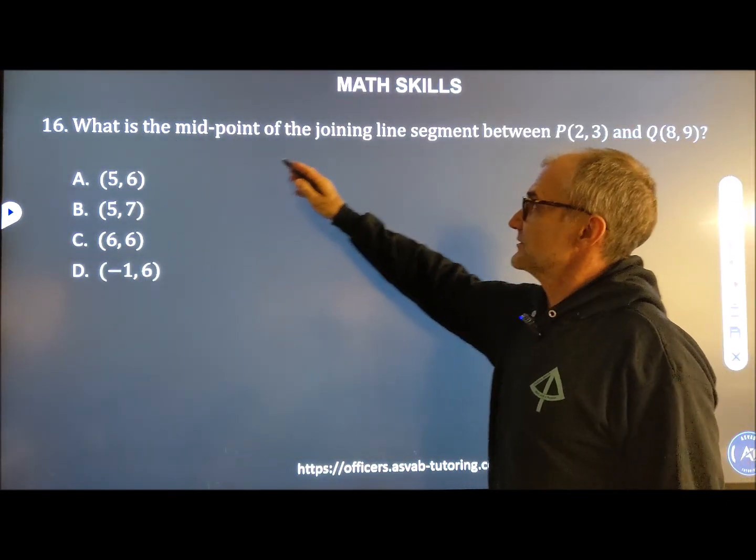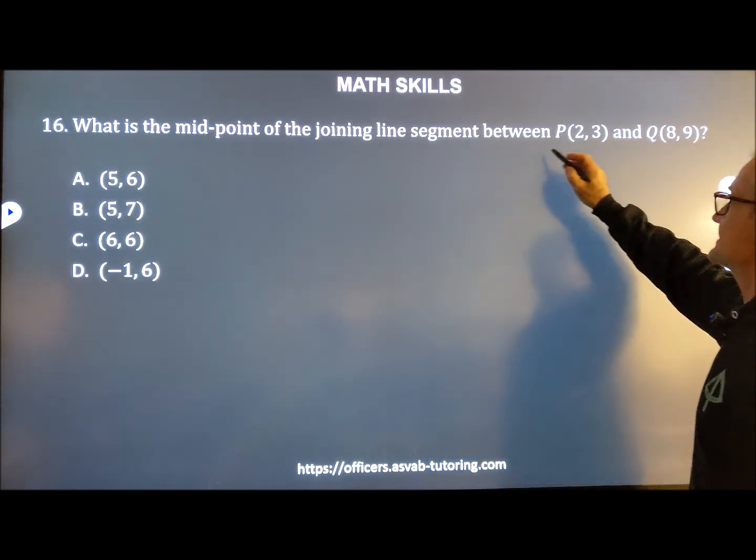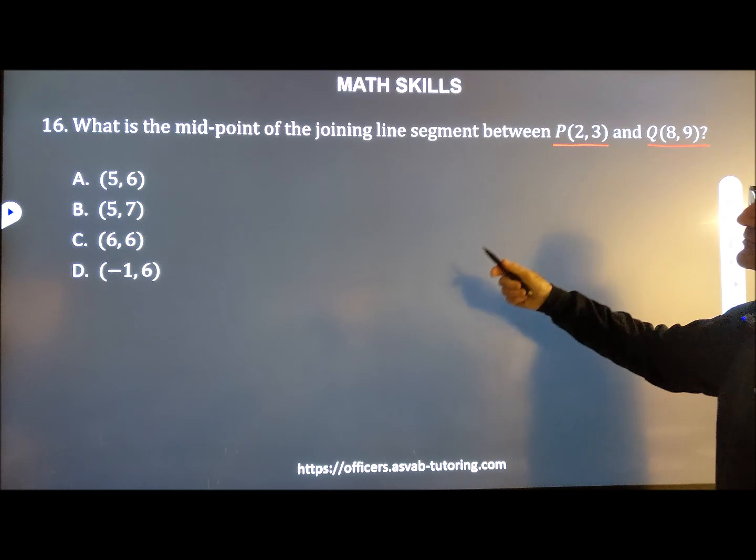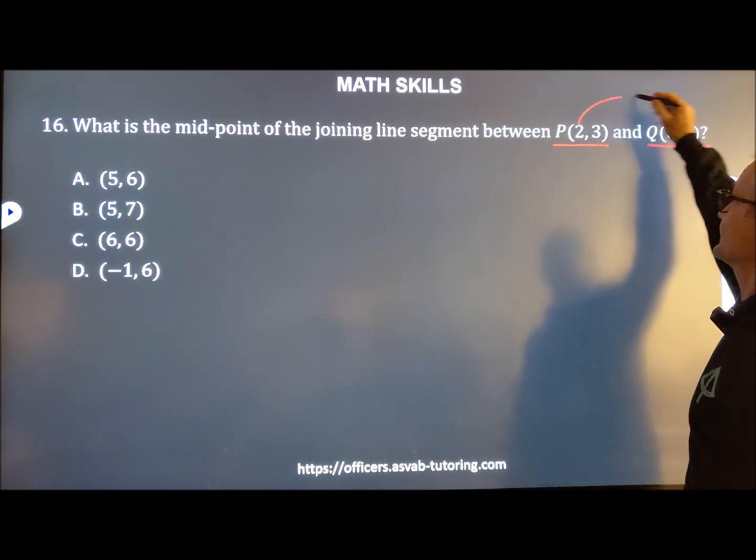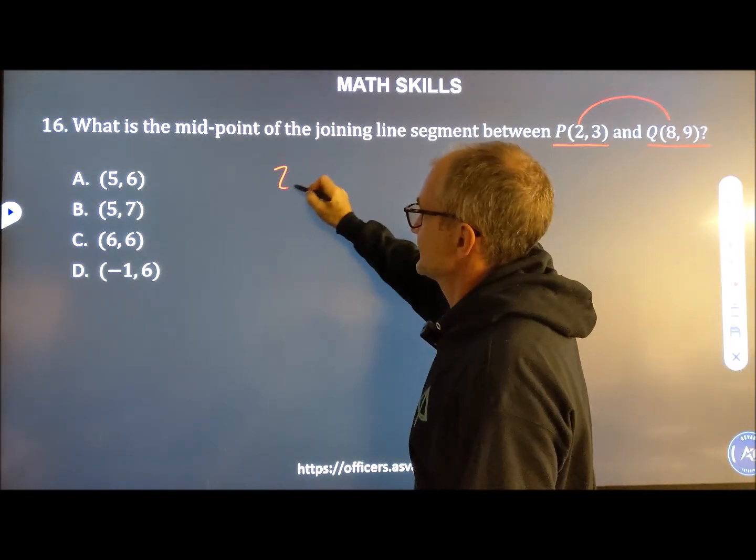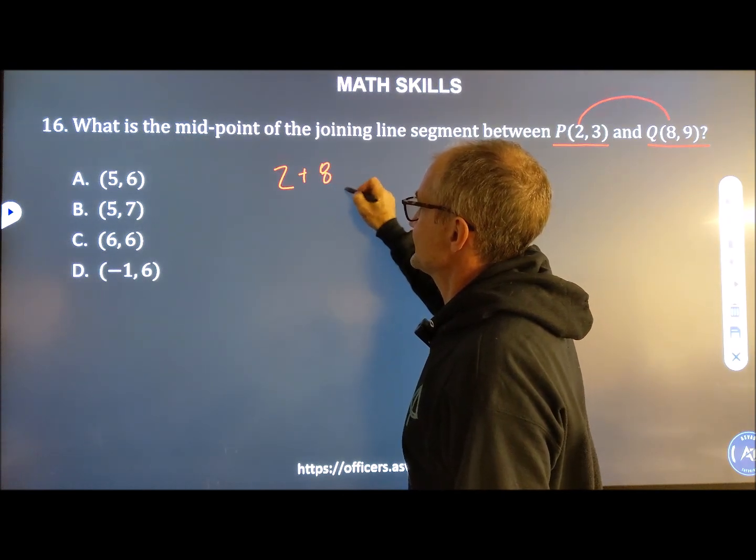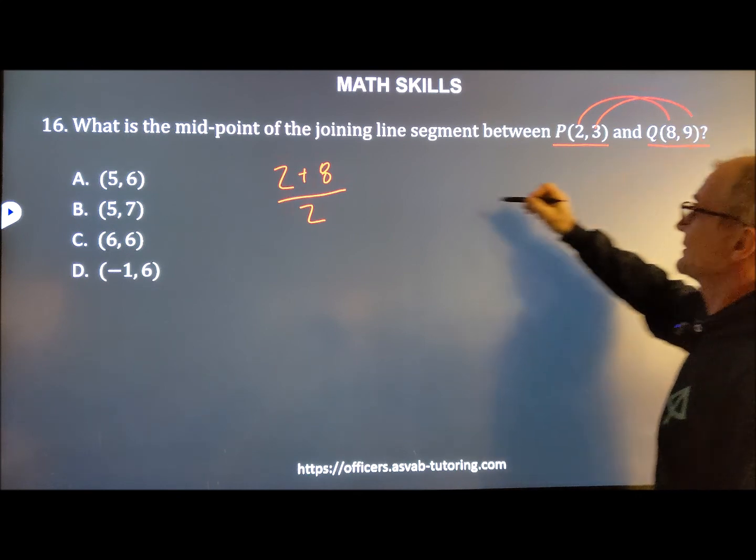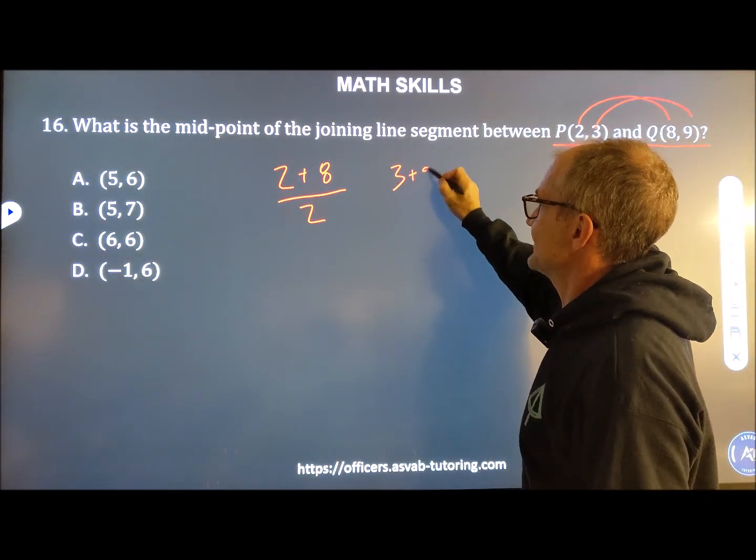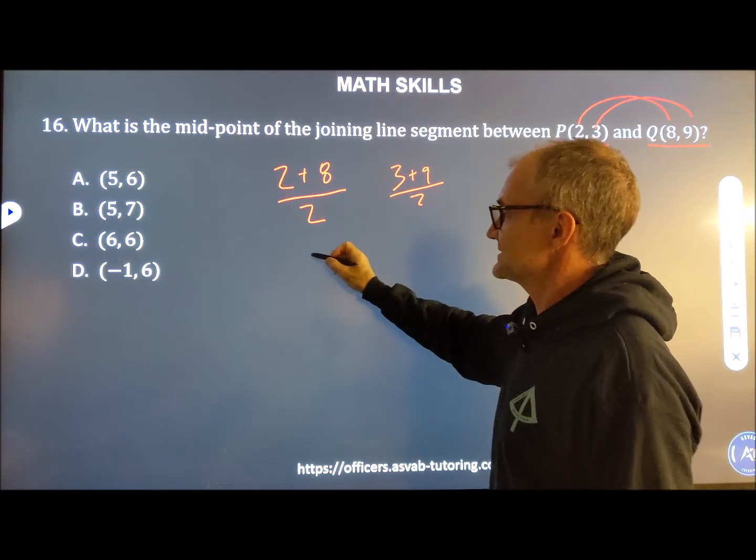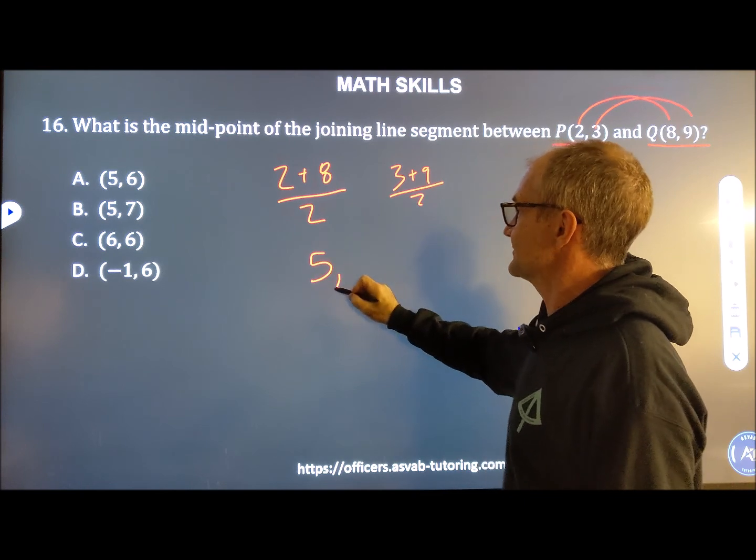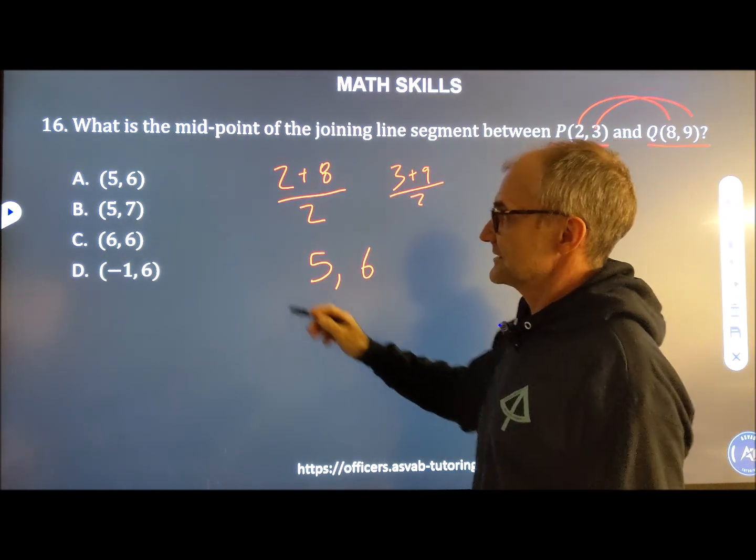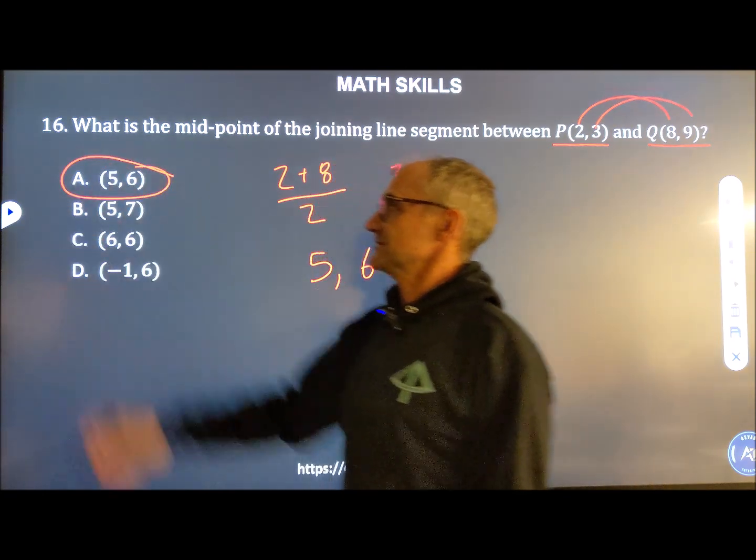Number 16, what is the midpoint of the segment between this coordinate and this coordinate? Well, the midpoint formula is just the average of the x value. So you're going to take 2 plus 8 and then divide that by 2. And then the average of the y value. So 3 plus 9 and divide that by 2. 2 plus 8 is 10, divided by 2 is 5. 3 and 9 is 12, divided by 2 is 6. So that gives us a coordinate 5, 6 right there.